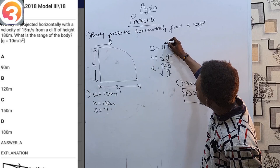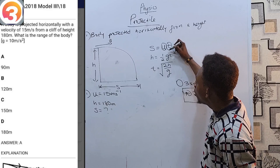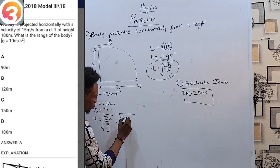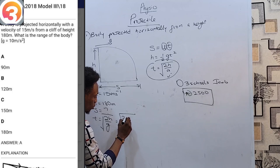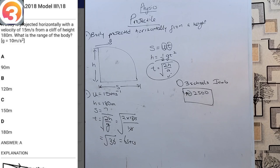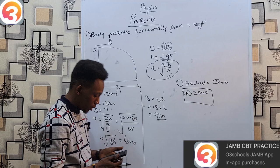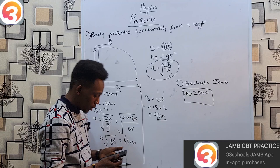I know the initial velocity and the height. To find range I need time, so I must first get time from the formula: t = √(2h/g) = √(2 × 180 / 10) = √36 = 6 seconds. Then s = ut = 15 × 6 = 90 meters. That is option A — very simple.